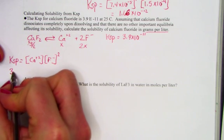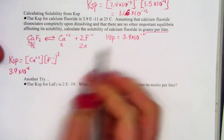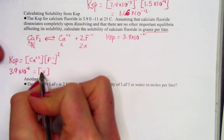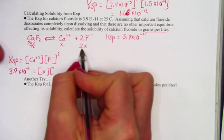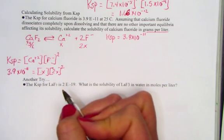So here's what we have. 3.9 times 10 to the negative 11th, the value of Ksp provided, is equal to x, what we called calcium. The value of fluoride is 2x, and I need to still square that value.